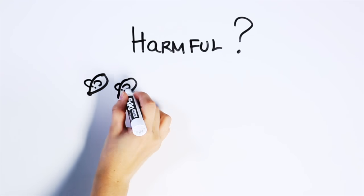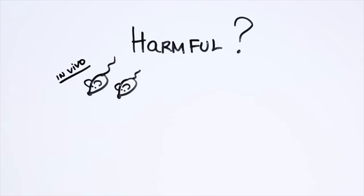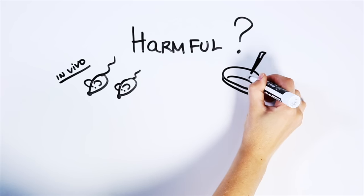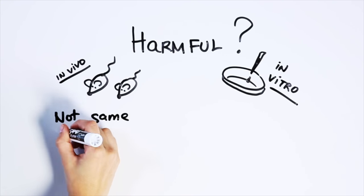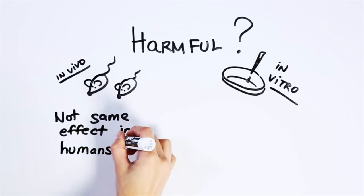One way is to do research on animals, called in vivo studies, or on cells in test tubes and petri dishes. These are called in vitro studies. But such research can only tell us so much. For example, many substances can affect us differently than they affect animals. So while chocolate is harmful to dogs and aspirin is toxic to cats, both are safe for humans when used appropriately.